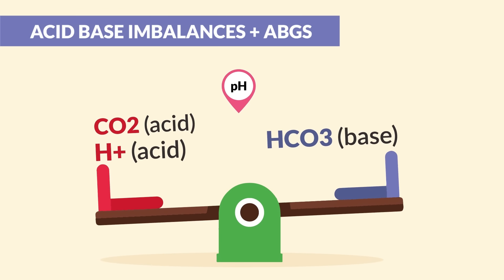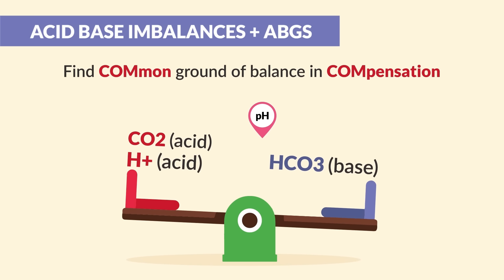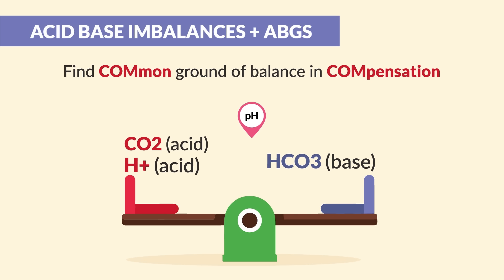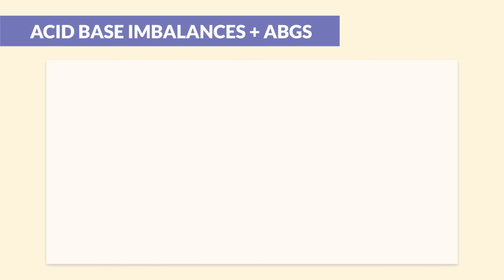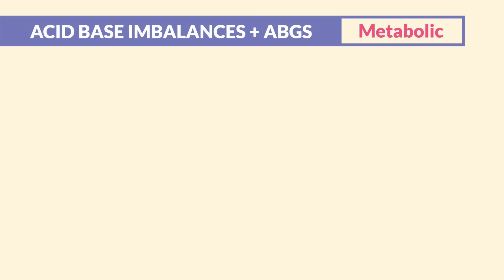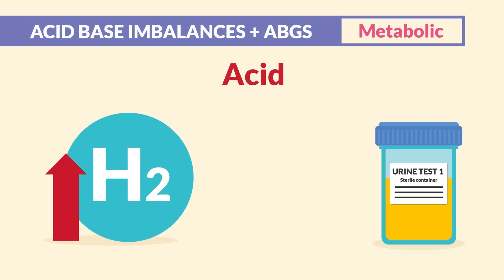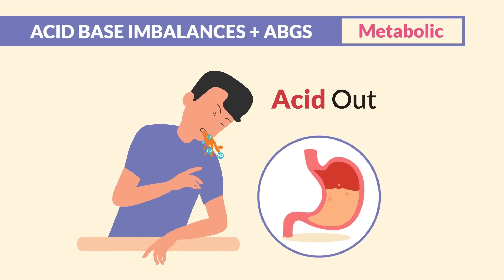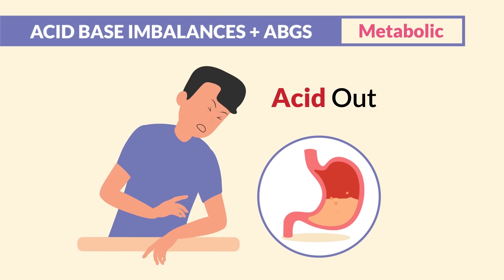This concept is called compensation — think of the body trying to find common ground with compensation, just trying to find that balance. Now that we understand the basics, let's talk about respiratory versus metabolic acidosis or alkalosis. For metabolic, acid can be found in the urine from those high hydrogen ions and also in the stomach acids.